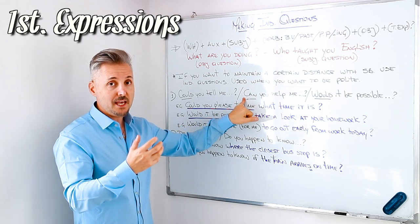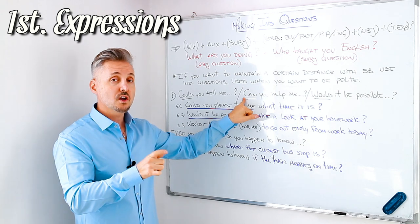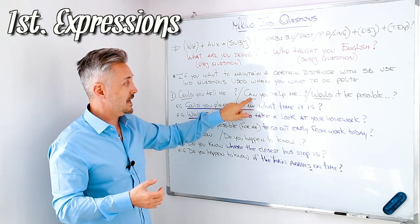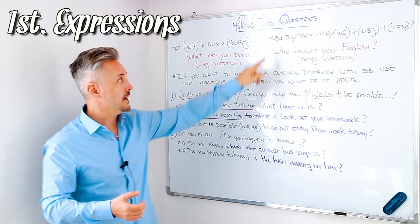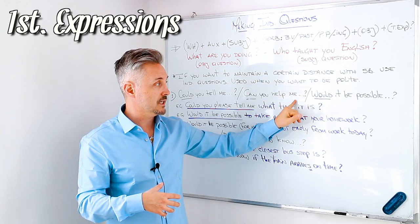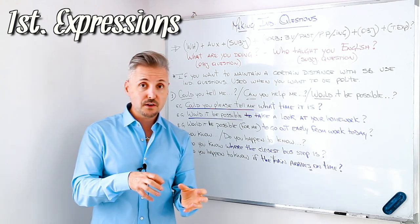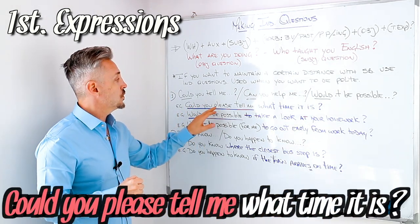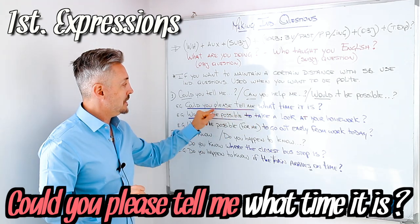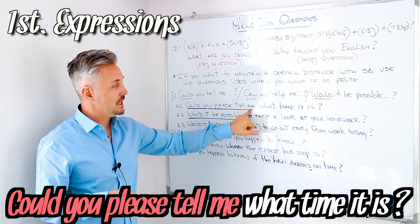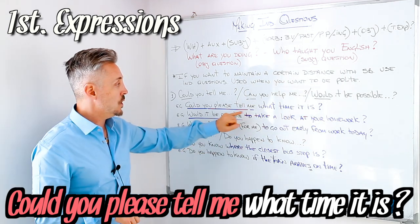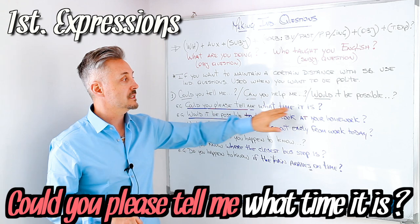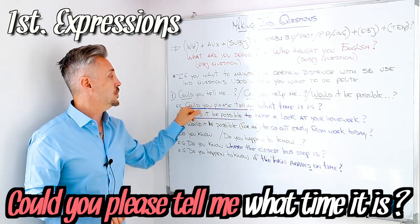Remember that if you're making an indirect question, the first part of the question is the actual question. So 'can' is the auxiliary, then 'you' is the subject, then 'help' is the base of the verb, and then the object. The rest is not a question itself. For example: 'Could you please tell me what time it is?' Notice that I don't say 'what time is it' but 'what time it is.' The question is 'Could you please tell me?' — that's why it's an indirect question.